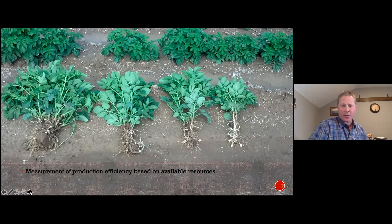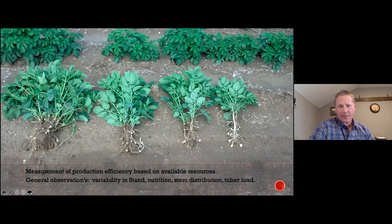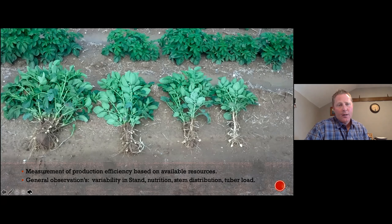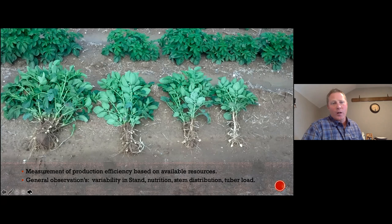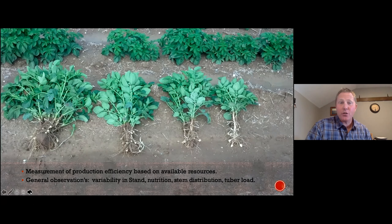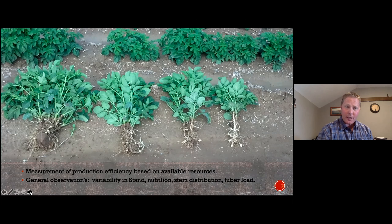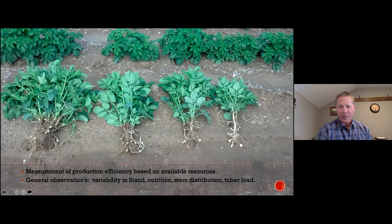A lot of the times what we see in general observation is variability in stands — maybe it's an emergence issue, maybe it's a germination issue from a seed quality problem, maybe there's some nutritional issues that we've got to address. In potatoes, I've learned over the years that a lot of what we see in terms of variability relative to stand is sometimes a seed size problem, which translates into a stem distribution problem, and essentially into a fruit load issue or tuber load in this instance.